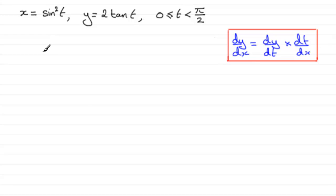So for the first part here, x equals sine squared t. We can think of this as sine t all squared. To differentiate this with respect to t, we need to use the chain rule.